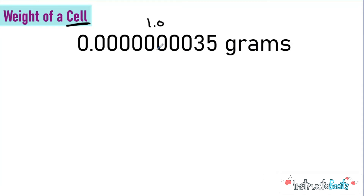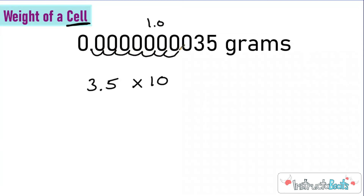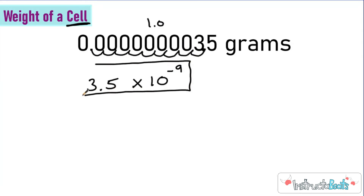So what we want to do is get rid of the non-significant digits and write this as 3.5 times 10 to some exponent. I know that I would need to move this decimal over one, two, three, four, five, six, seven, eight, nine places, and I know I need to make this a negative 9, because if I were to solve this scientific notation, I'd be moving my decimal place to the left, which means I need to be dividing by a power of 10 using my negative exponent rule. So this is a really great reason to write scientific notation — a lot faster to write it this way than using all those digits.